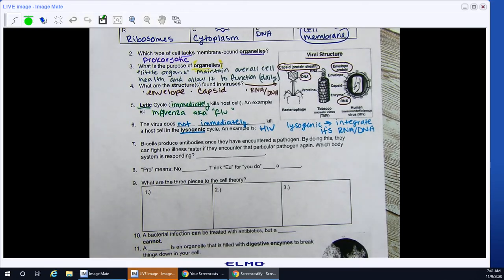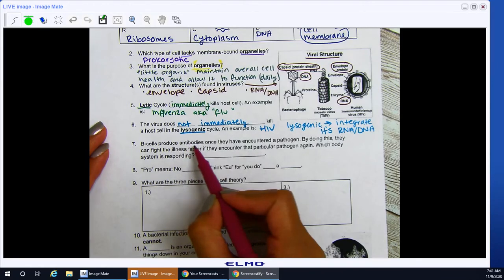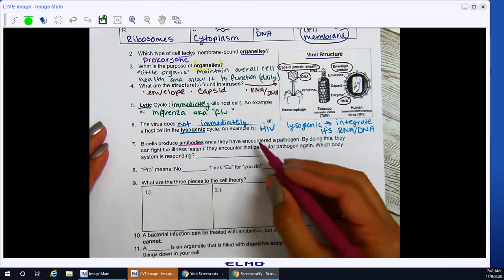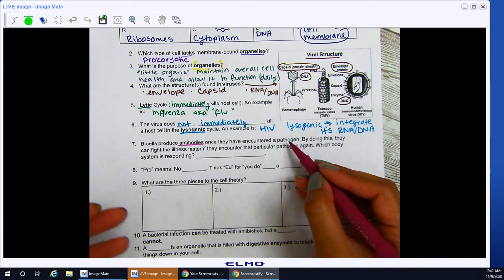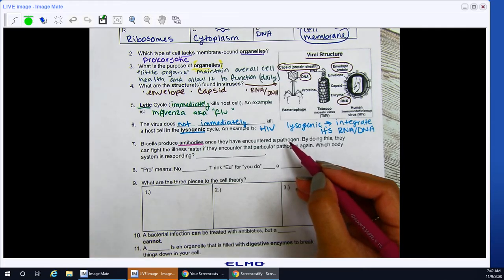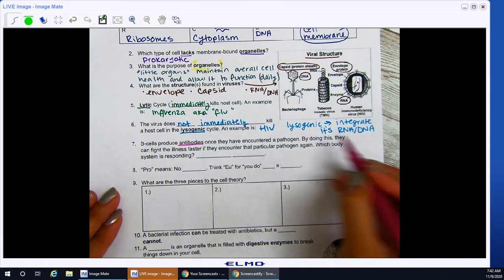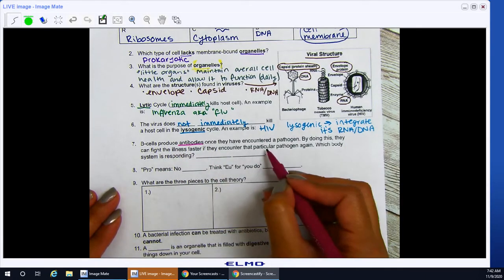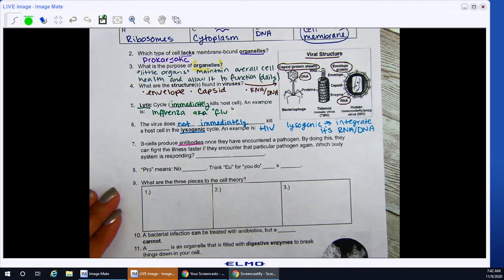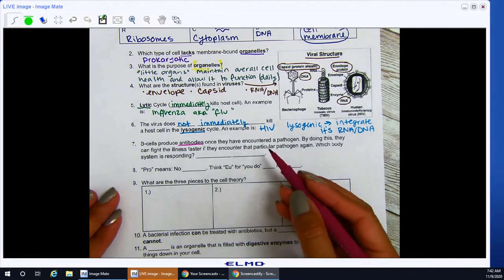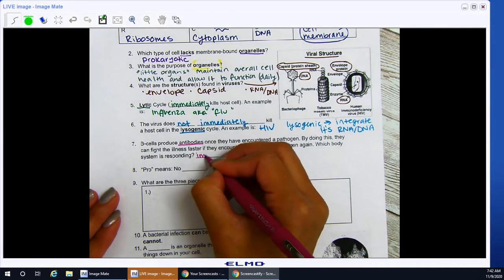Number seven, B-cells. Oh, these are antibodies. This is your main defense or part of your defense here. You have B-cells, you have helper T-cells. B-cells produce antibodies. Once they have encountered a pathogen, remember that a pathogen is any type of infectious agent. It can be a bacteria, a virus, or a fungus, anything that causes you illness. By doing this, they can fight the illness faster if they encounter that particular pathogen again. Which body system is responding? Well, I just mentioned this about the flu. Number two, this is your immune system.